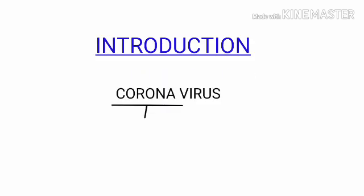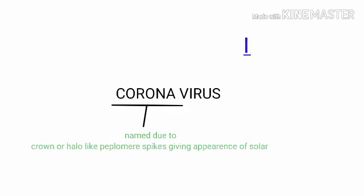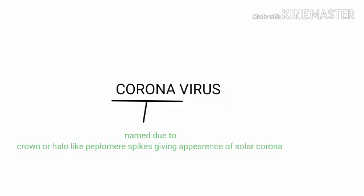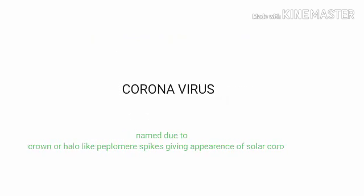Introduction. Coronavirus — named due to crown or halo-like pectomere spikes, giving the appearance of a solar corona.